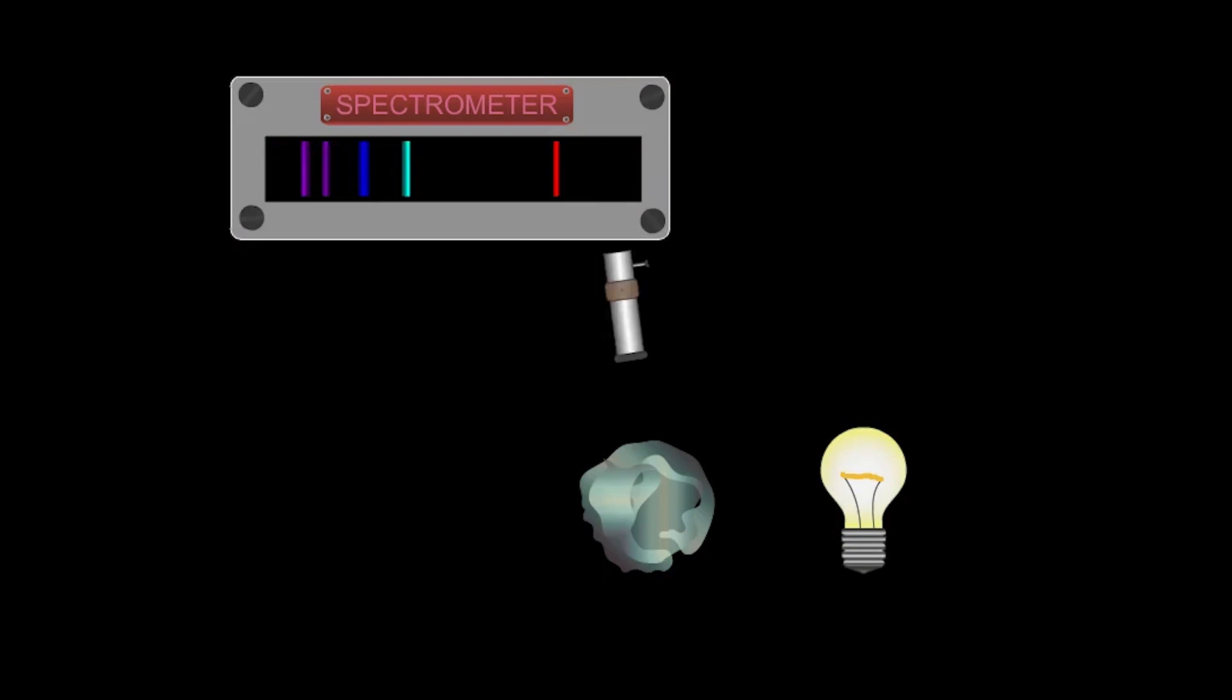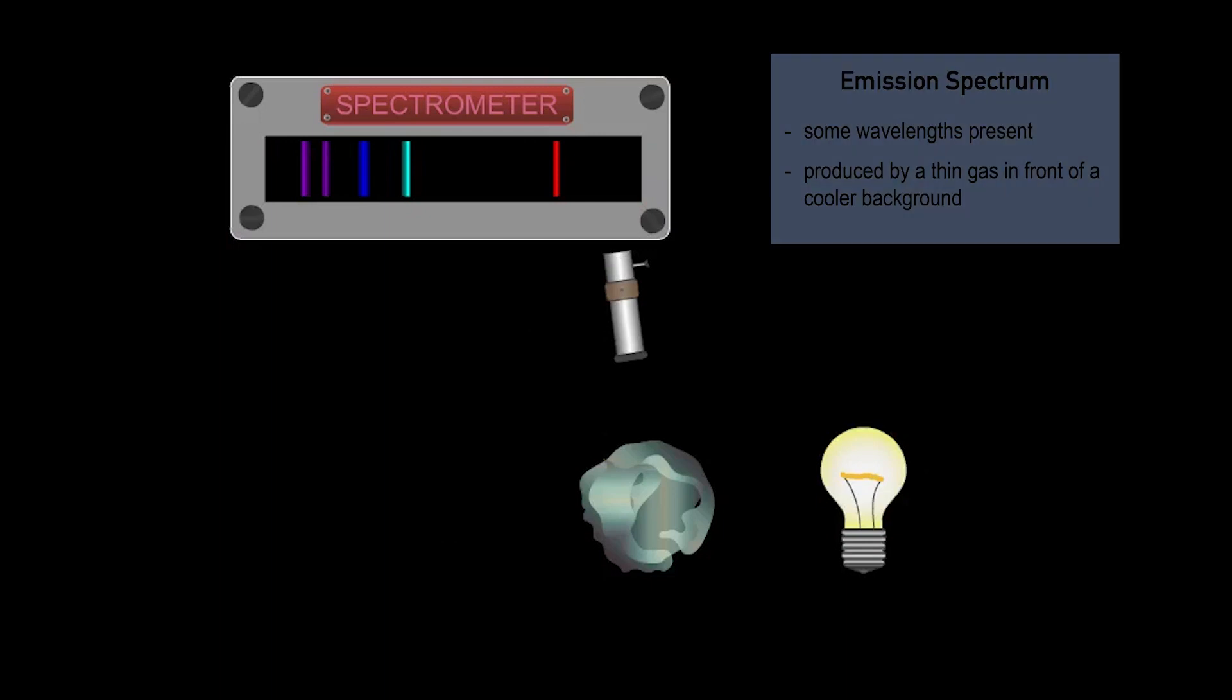If we look directly at the light coming from the cloud, we see the colors that were absorbed being emitted. This is an emission spectrum. A few colors of light are present.